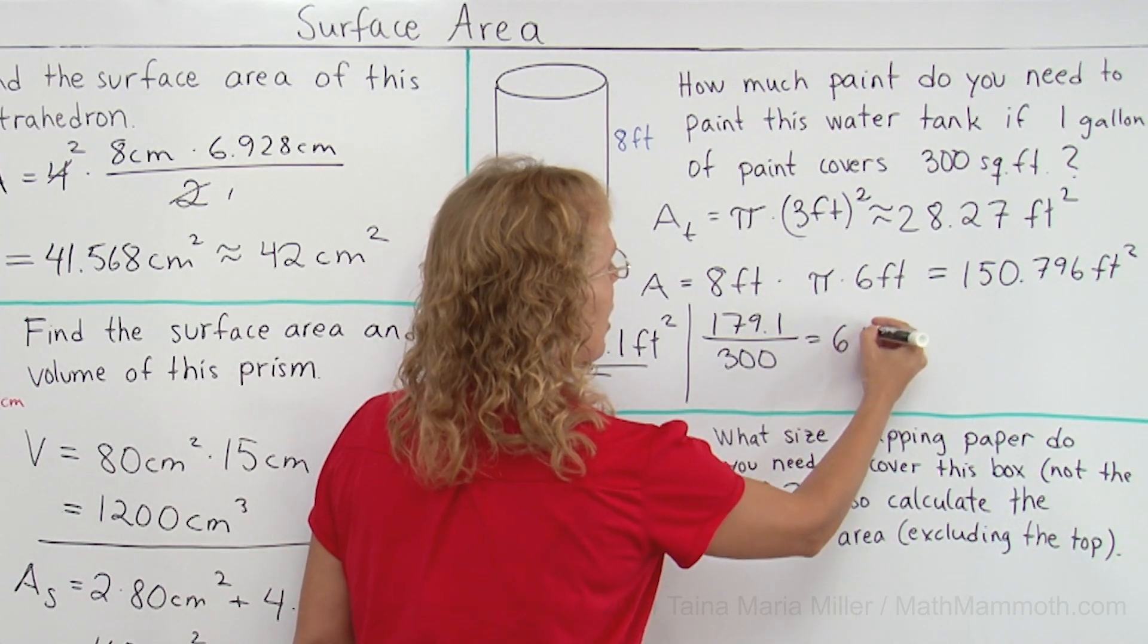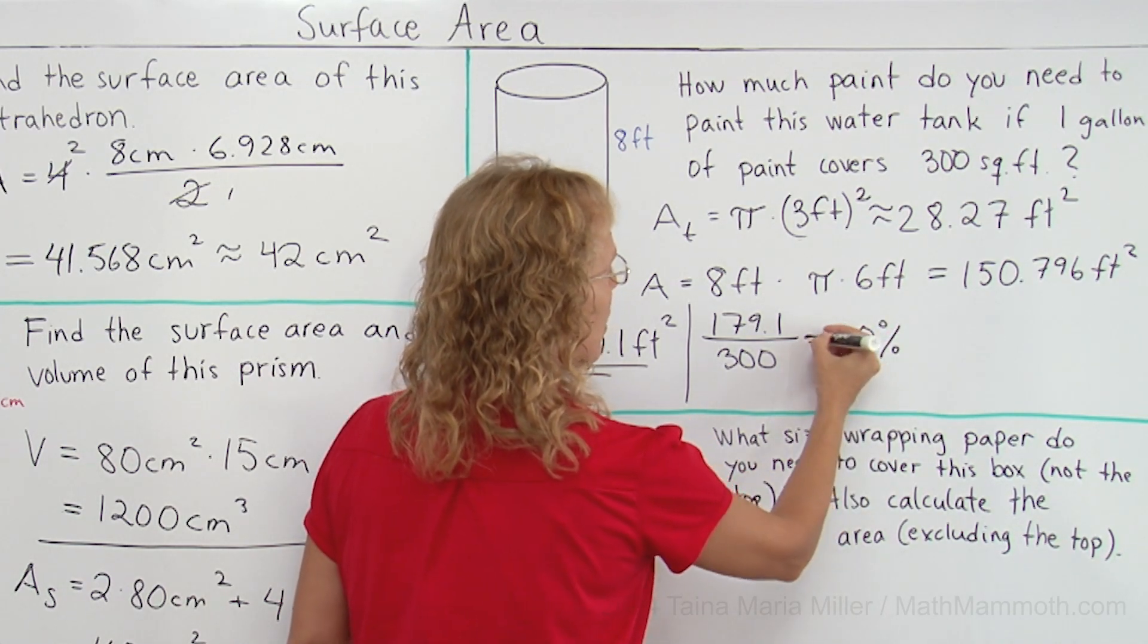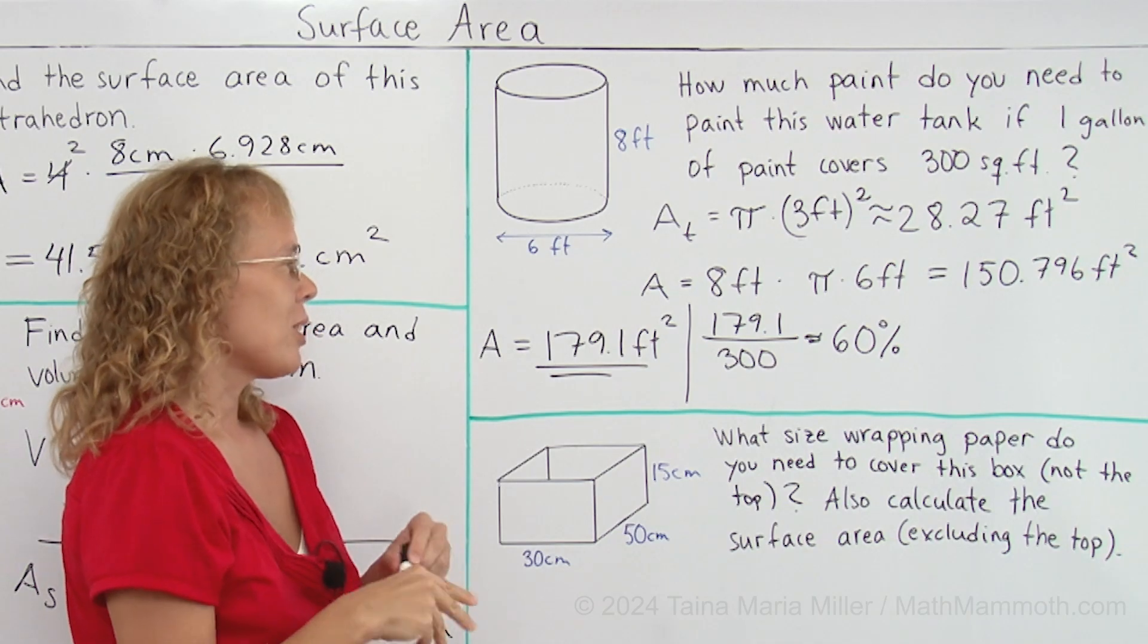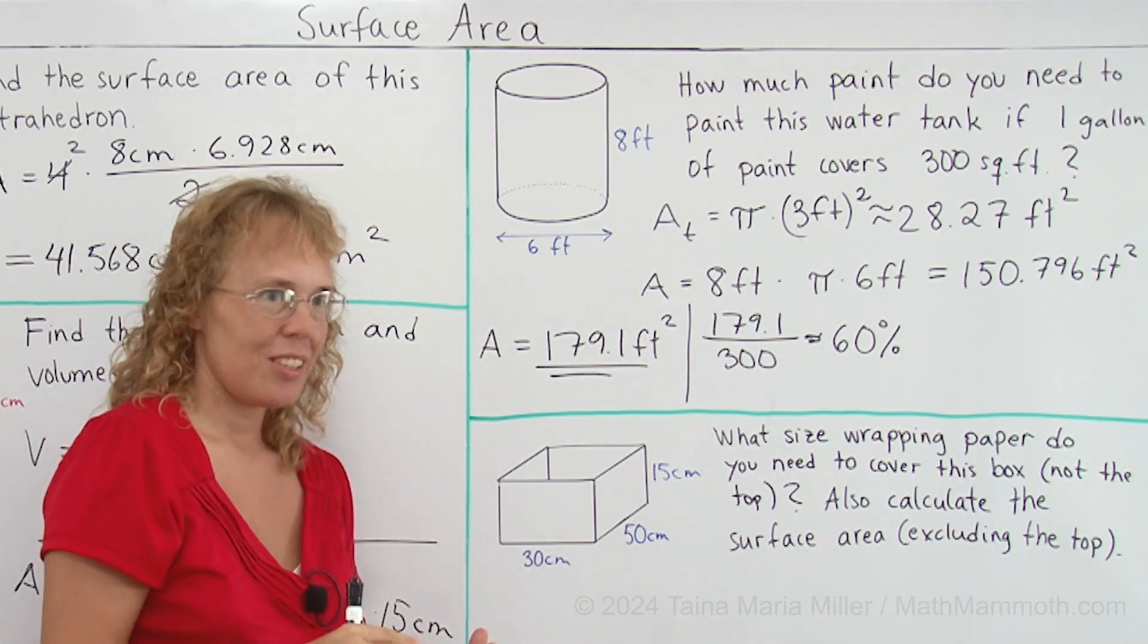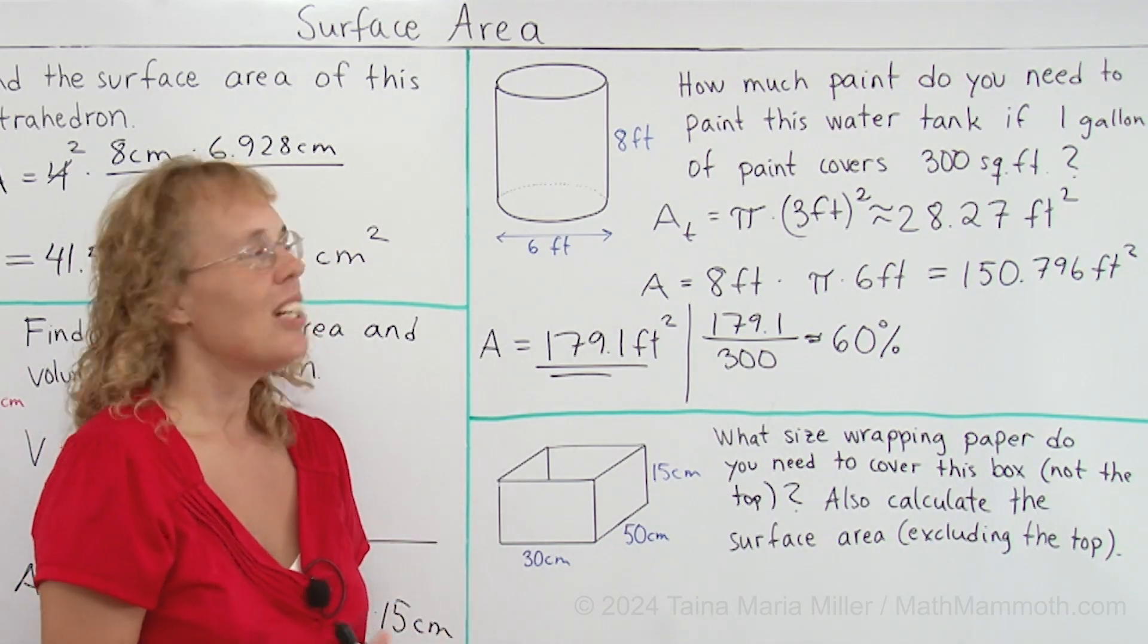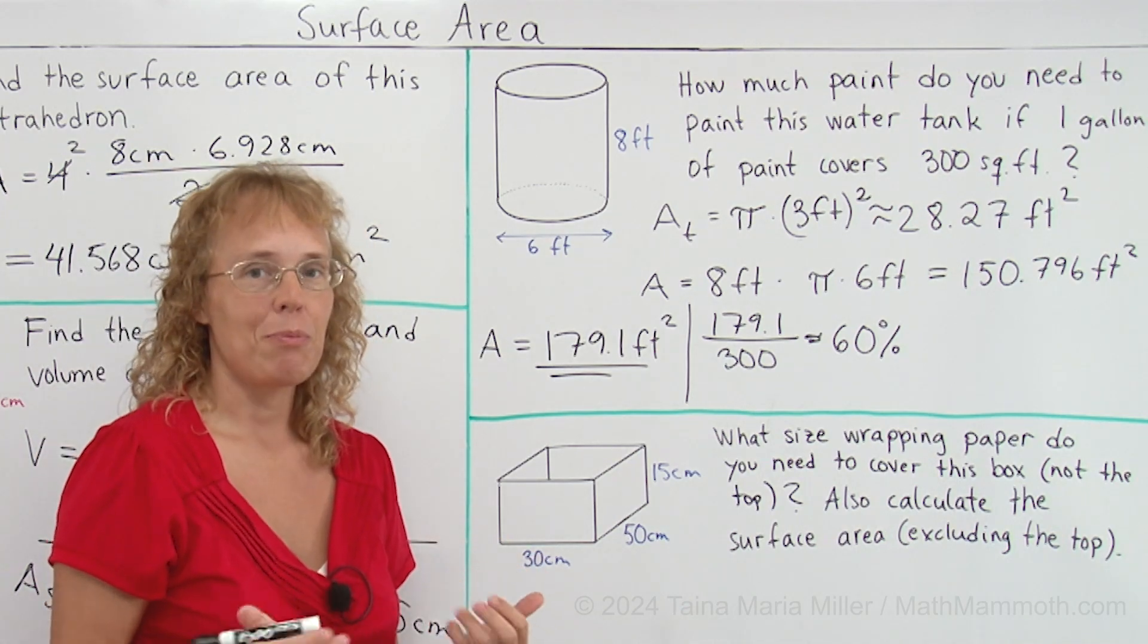This ends up being about 60 percent, about 0.6, so you need about 60 percent of one gallon, a little over half a gallon. So you still probably want to just go ahead and buy one whole gallon of paint.